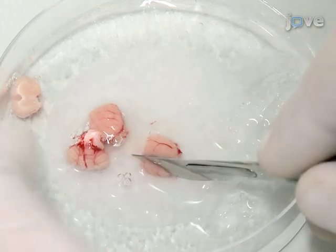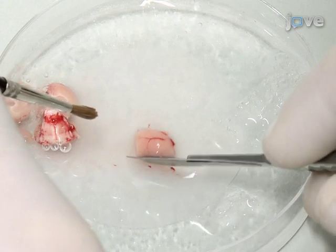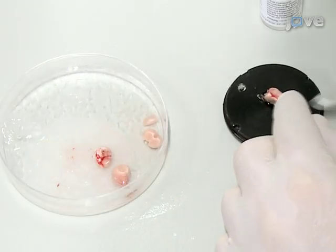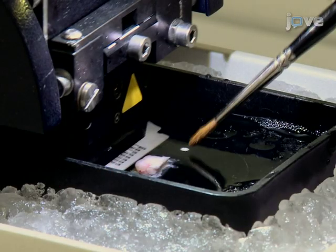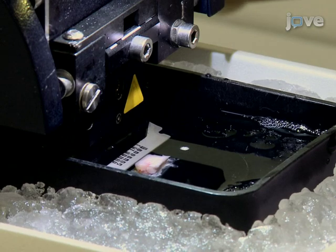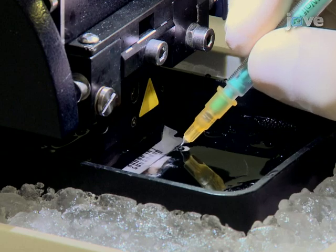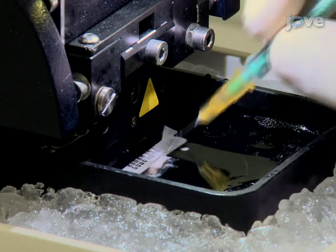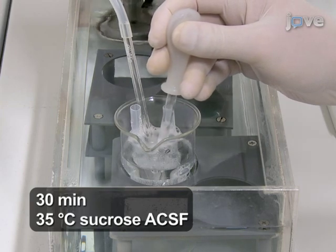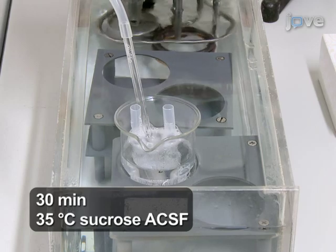Remove the dorsal surface of the cortex to provide a flat surface to glue the brain for sectioning. Glue the hemispheres onto the vibratome stage. With the vibratome bath filled with semi-frozen carbogenated sucrose ACSF, cut 300 micrometer transverse slices of the hippocampal formation. Transfer each slice to a submerged holding chamber containing carbogenated sucrose ACSF at 35 degrees Celsius.